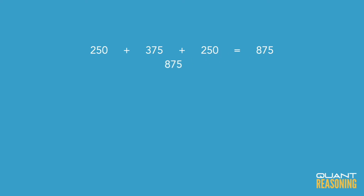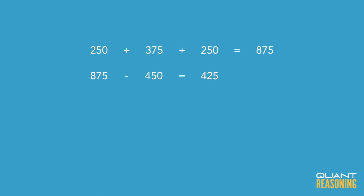We spent $250 and $375 on bikes. When we sold both of them, we ended up bringing in $875. Now, we know we sold one of those bikes for $450, which means the remaining $425 of revenues came from the second bike.